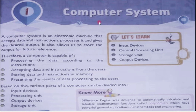First of all, we are starting with the computer system. So what is a computer system? A computer system is an electronic machine that accepts data and instructions, processes it, and gives the desired output. It takes input from the user, processes that data, and gives output to the user.